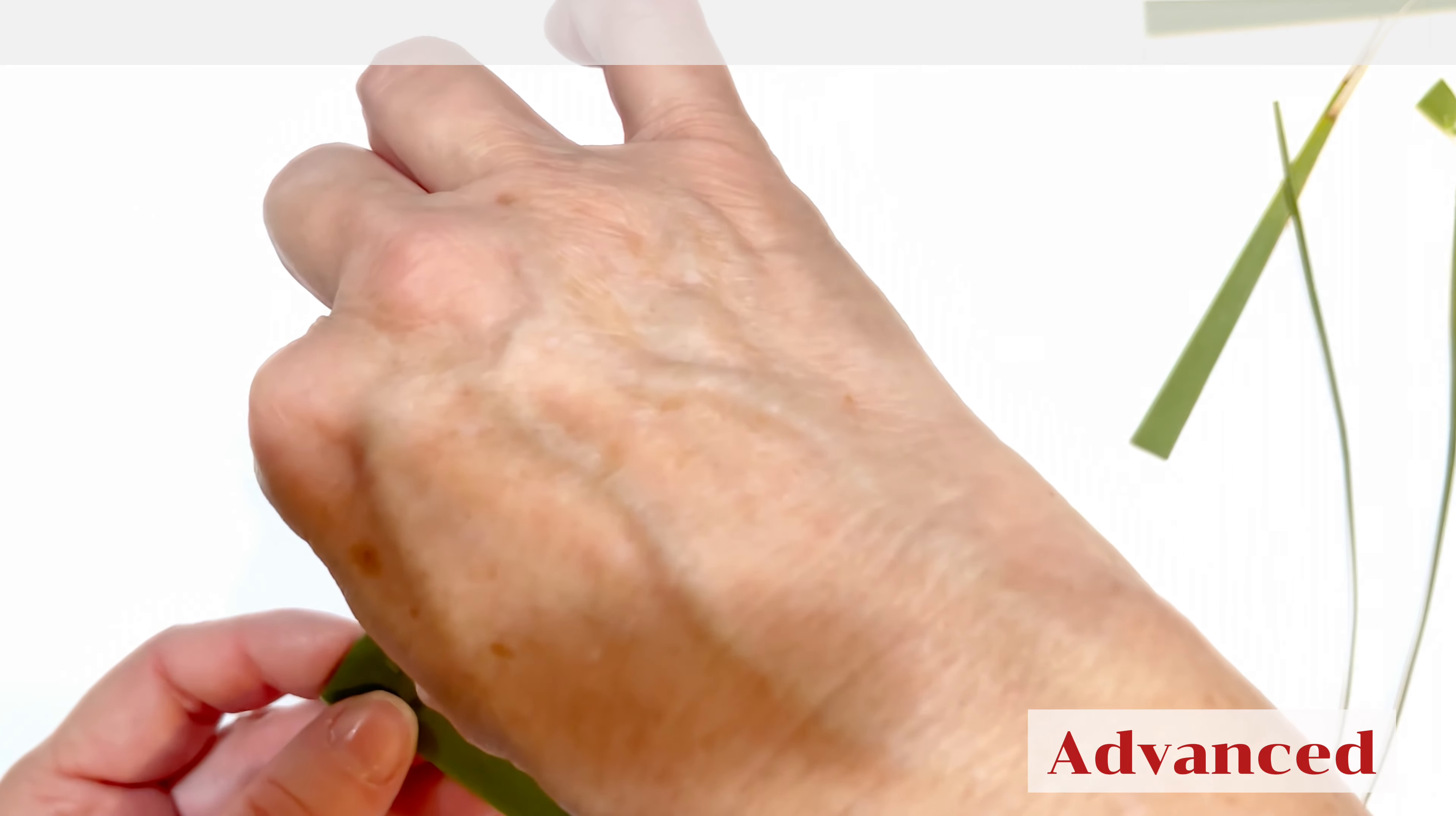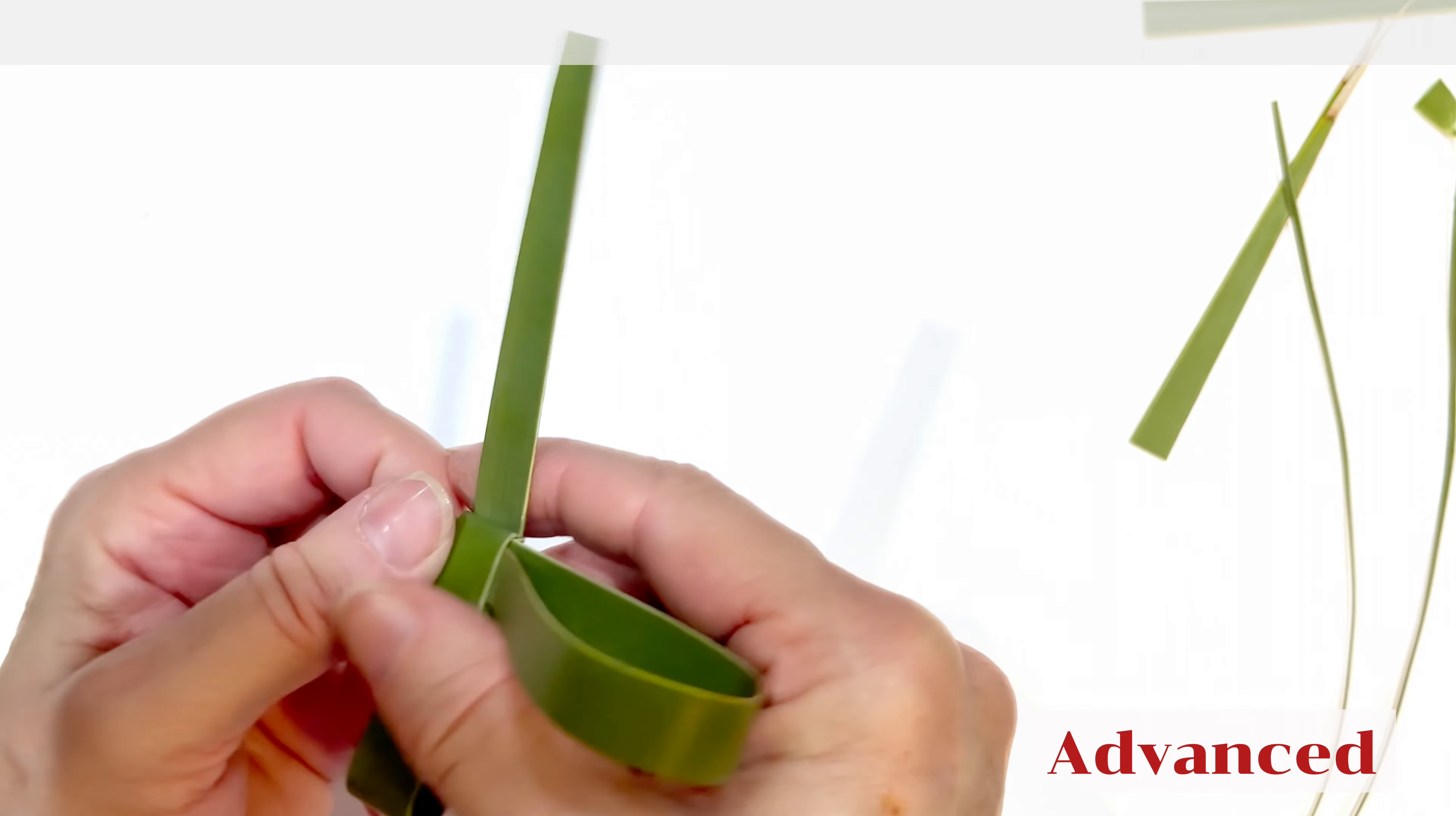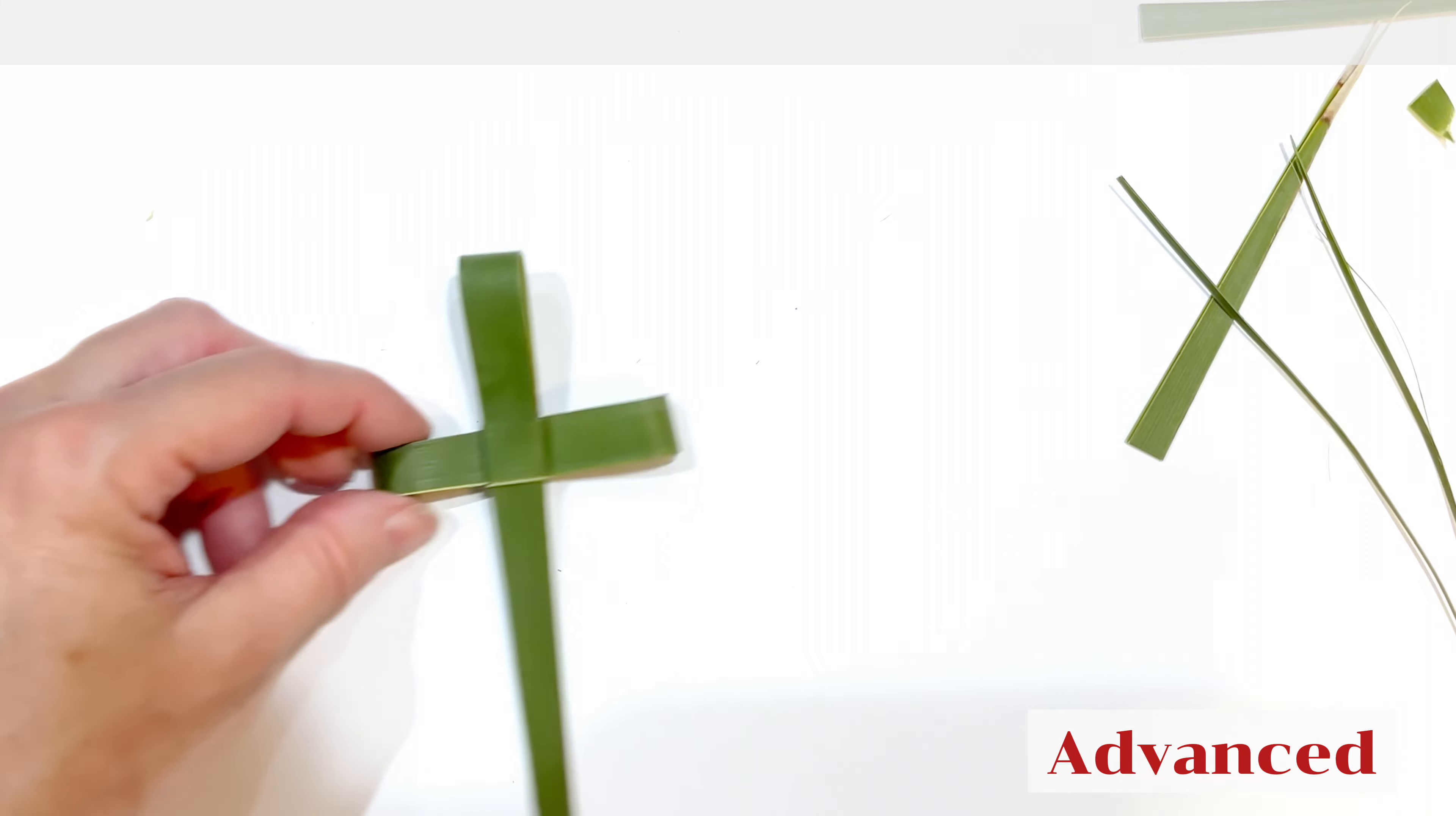Loop down. Looking for that horizontal line right there. Loop through the back pocket here. And loop around this way. And you have your cross.